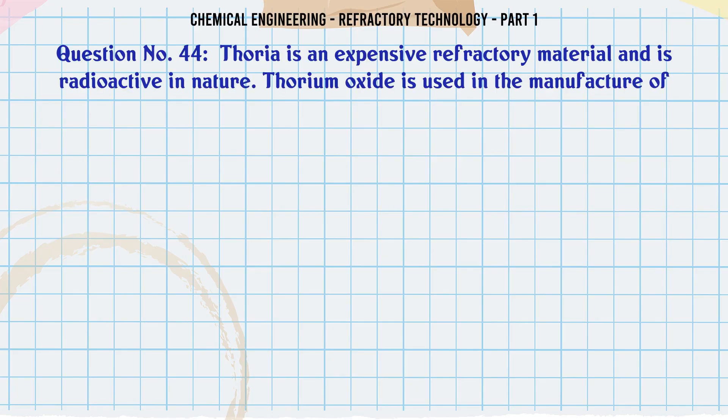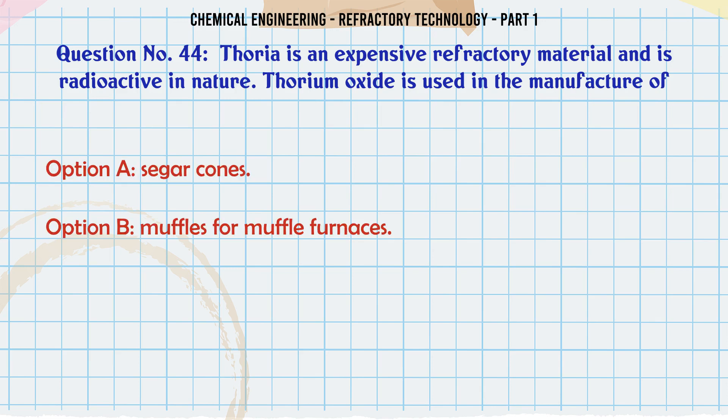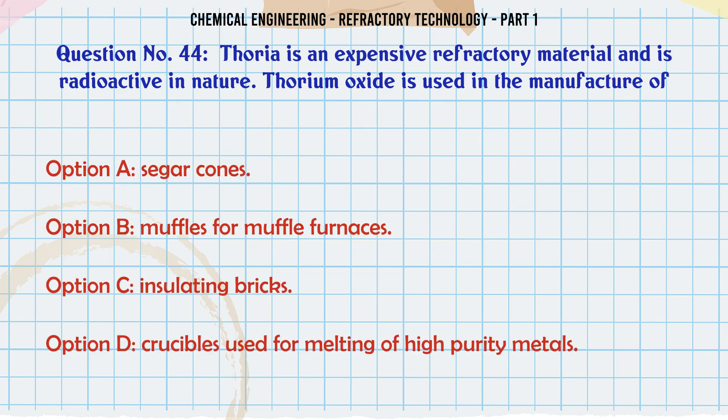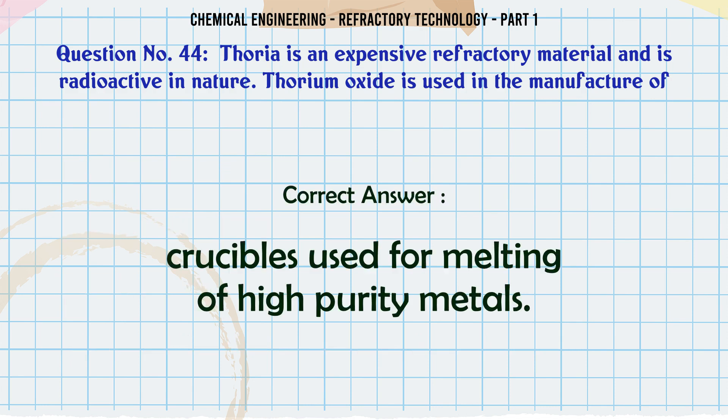Thoria is an expensive refractory material and is radioactive in nature. Thorium oxide is used in the manufacture of: A. Seger cones, B. Muffles for muffle furnaces, C. Insulating bricks, D. Crucibles used for melting of high purity metals. The correct answer is Crucibles used for melting of high purity metals.